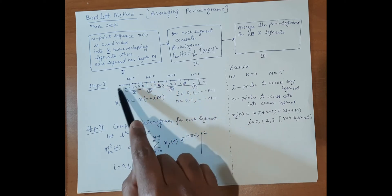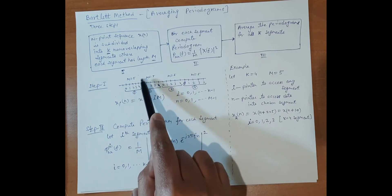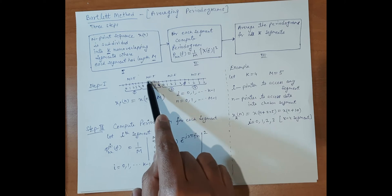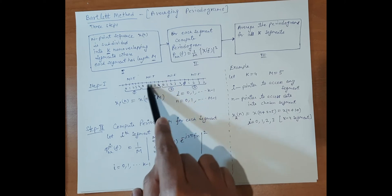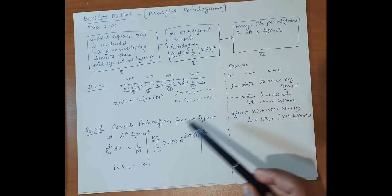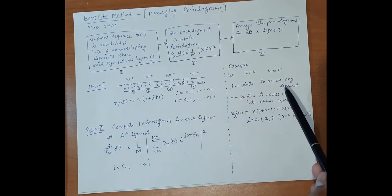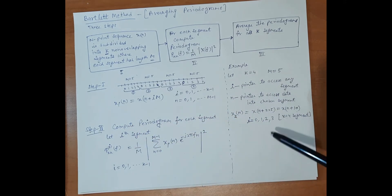Similarly, this segment contains x_1(0), x_1(1), x_1(2), and so on. This is the segmentation of data into k segments, each having m elements.